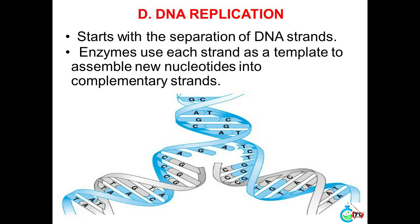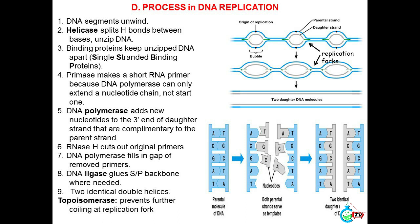Hydrogen bonds between bases hold the strands together. D. DNA replication starts with the separation of DNA strands. Enzymes use each strand as a template to assemble new nucleotides into complementary strands. Process: (1) DNA segments unwind; (2) Helicase splits H-bonds between bases (unzipped DNA); (3) Binding proteins keep unzipped DNA apart (single-stranded binding proteins); (4) Primase makes a short RNA primer because DNA polymerase can only extend a nucleotide chain, not start one.